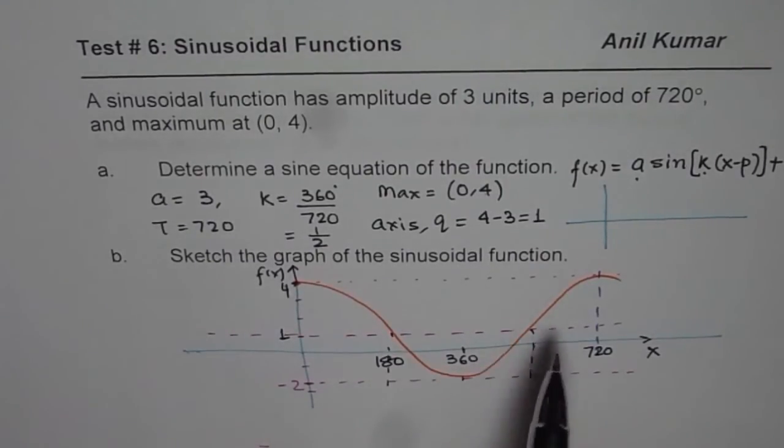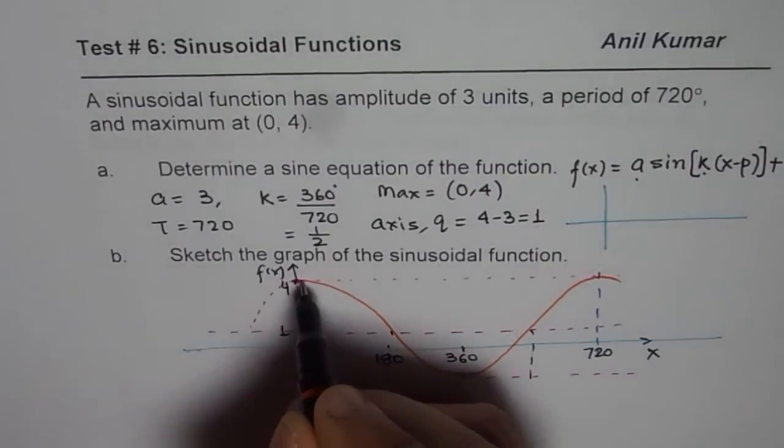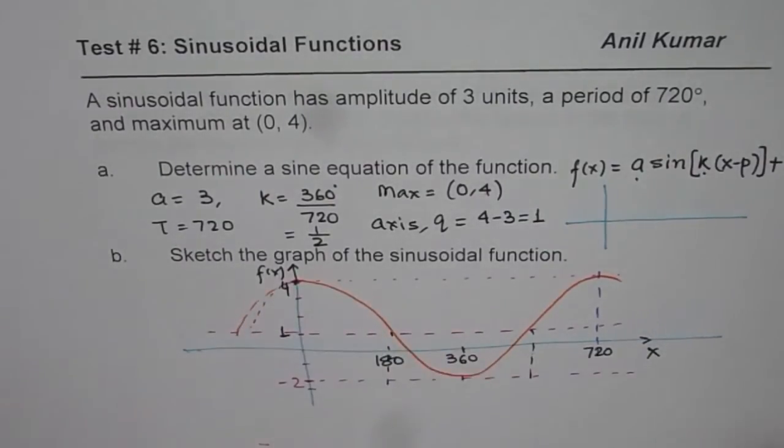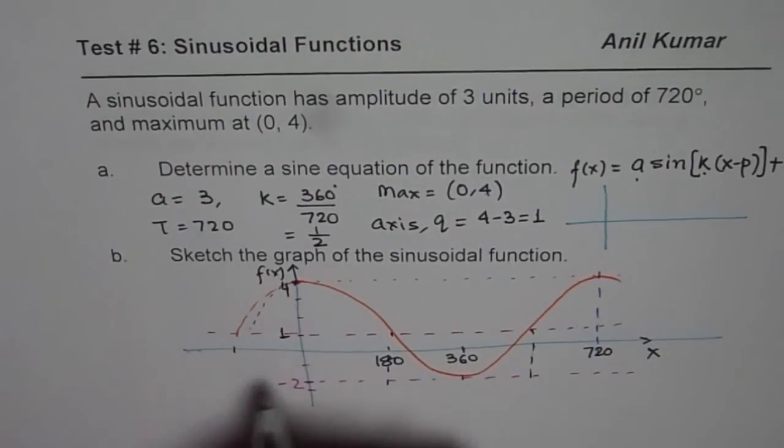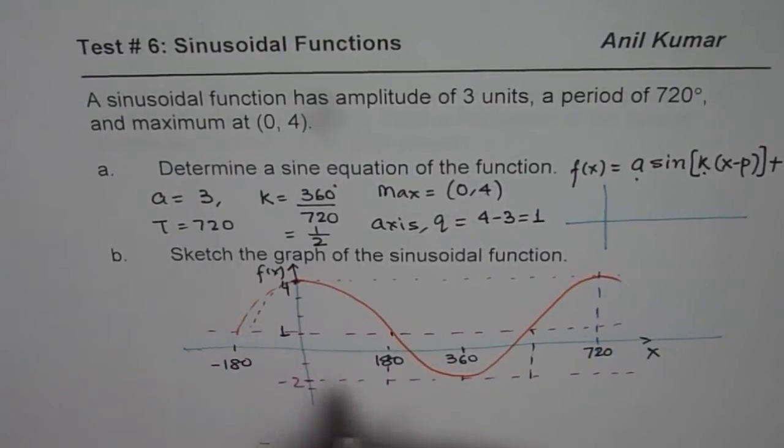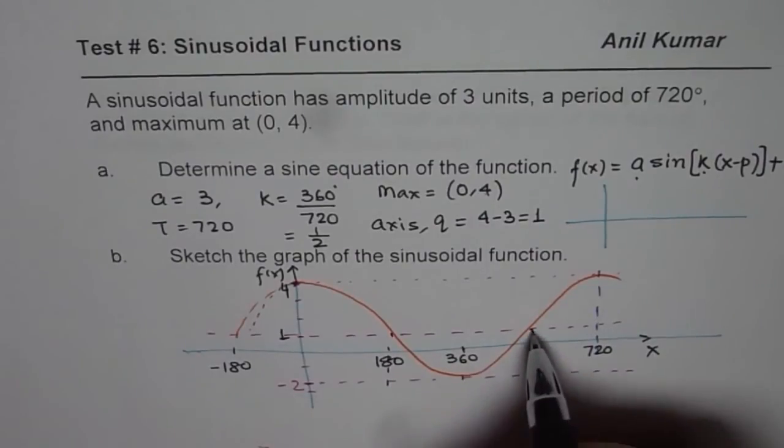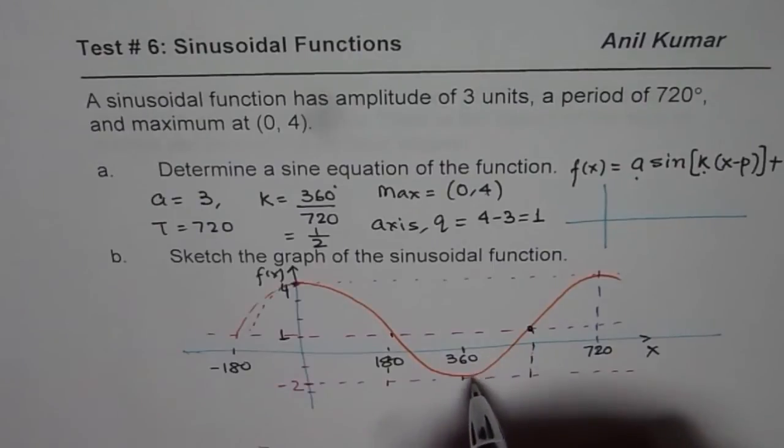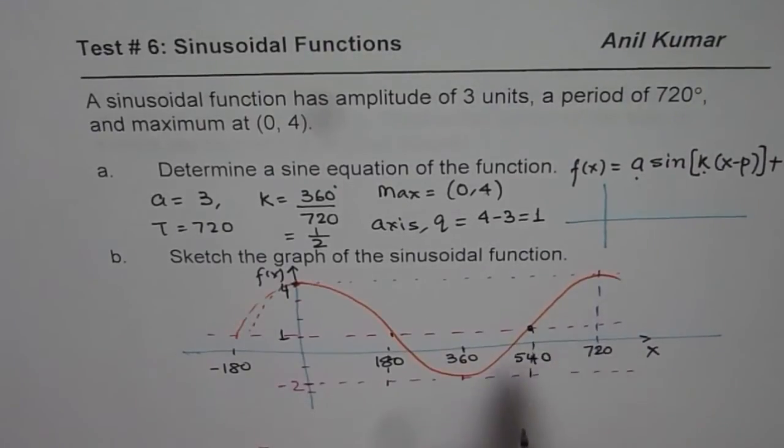You should understand that a sine wave actually starts a quarter of the cycle before. So if we do like this, quarter of the cycle, it should have started here at minus 180. That is one way of saying it. Or, we could add 180 to 360 and consider that point. So both could be our solutions. If I add 180 to this, I get 540.